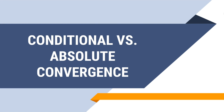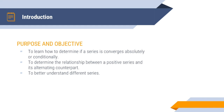Today we're going to be learning about conditional versus absolute convergence. The purpose of this lesson is to determine if a series converges absolutely or conditionally. Previously we learned how to determine if a series converges or diverges, but we weren't able to compare the positive series and its alternating counterpart, which we will now learn how to do.